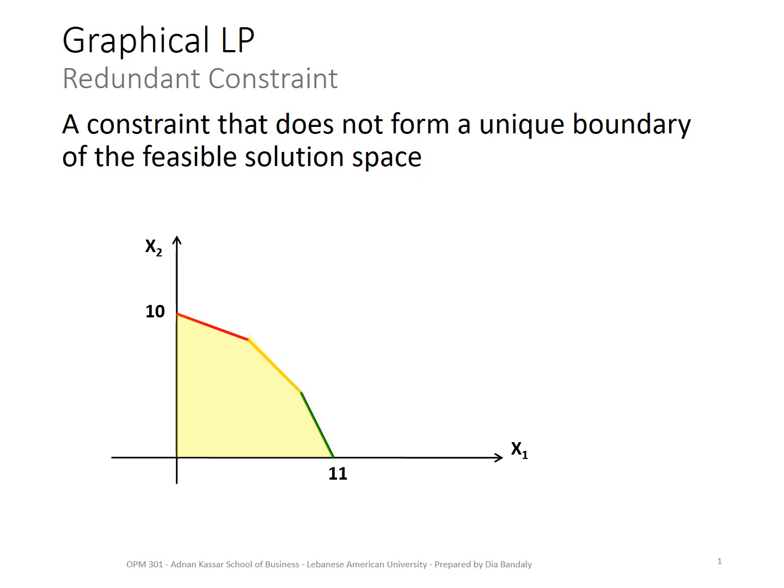This is the feasible space that we ended up with. What if we had one more constraint that when we plot it will look something like that? We can see easily that this new constraint does not contribute at all to the feasible solution space — it does not reduce it further. So this constraint does not affect your solution, and this is why we call it a redundant constraint.